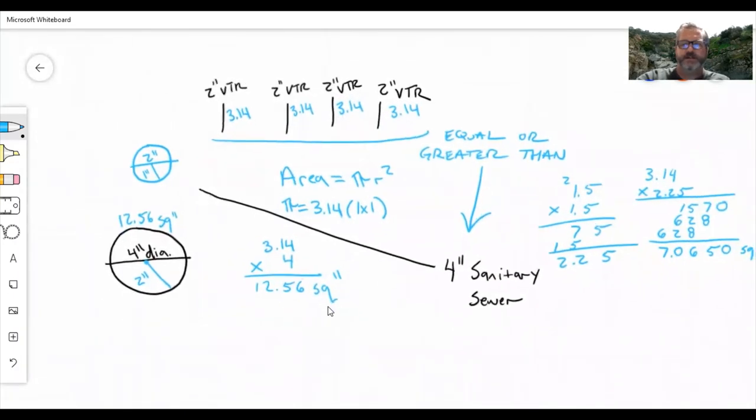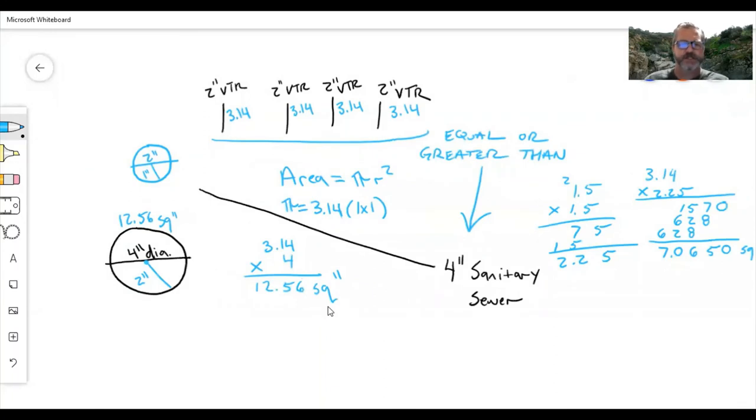I hope that this quick little demonstration on cross-sectional area explains what was asked. I probably went into a little more detail than was necessary, but the crux of it is the vents through the roof have to be equal to or greater than the sanitary sewer line coming out of the building.